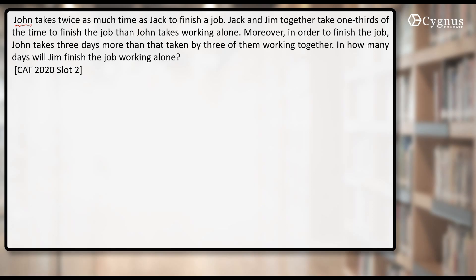Since he takes double time, I can say that efficiency of John will be half of Jack. The first person is John. The next one is Jack. He takes twice as much time as Jack to finish a job.